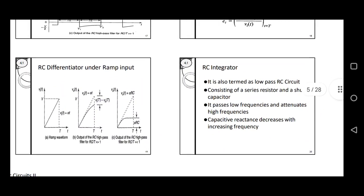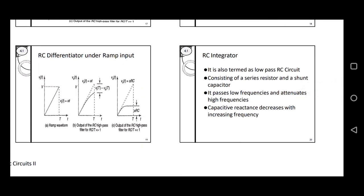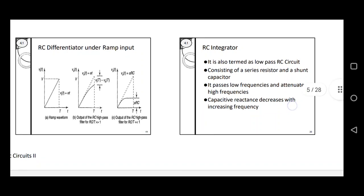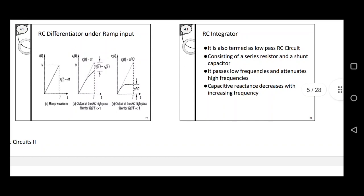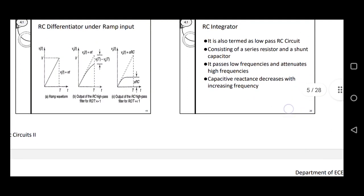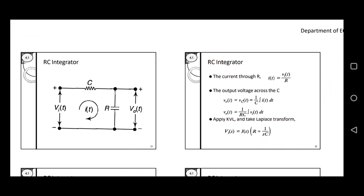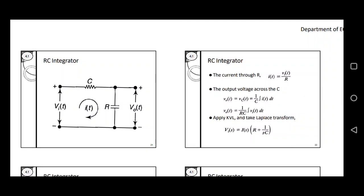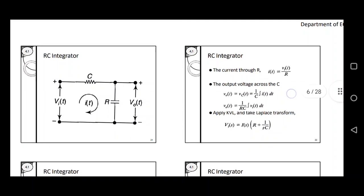Now we are going to discuss the concept of RC Integrator. The RC Differentiator is a high-pass filter, but the RC Integrator is a low-pass filter. The low-pass filter only allows low-frequency components. The circuit consists of a series resistor and a shunt capacitor. It passes low frequencies and attenuates high frequencies — it rejects the high frequencies. The capacitive reactance decreases with increasing frequency. In this circuit, vi(t) is the input, v0(t) is the output voltage, and the current through R is i(t) equal to vi(t) divided by R.